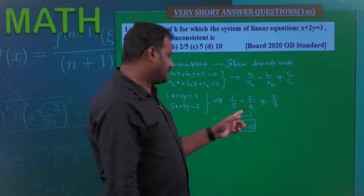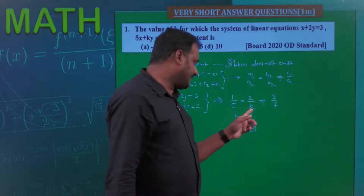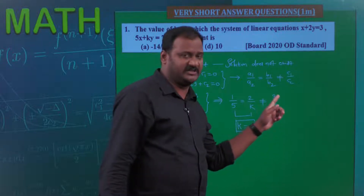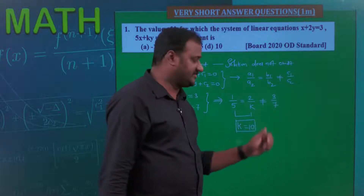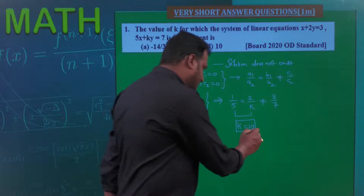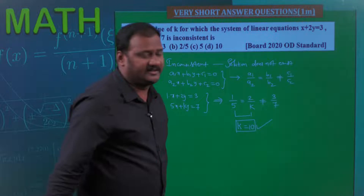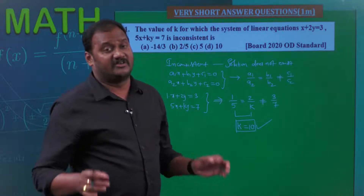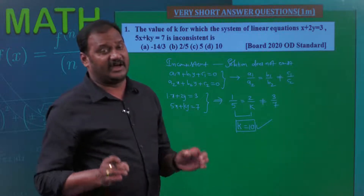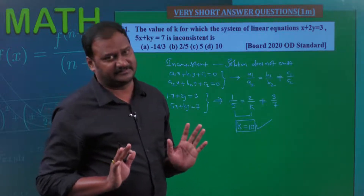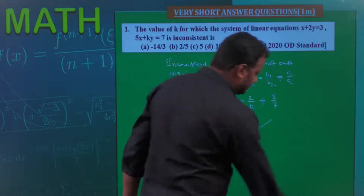Substituting k = 10: 2/10 = 1/5, and 1/5 is absolutely not equal to 3/7. Therefore k = 10 is our final value of k. Hope you understood?